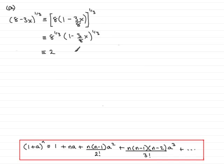This is now multiplied by the expansion of 1 minus 3 eighths x to the power of 1/3. And this is in this particular format here. We have the 1 and the a value is minus 3 eighths x, and n, the power here, is 1 third.